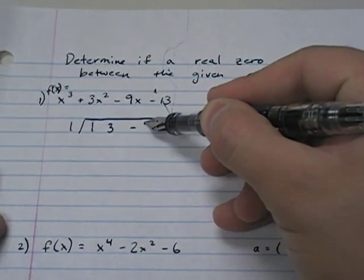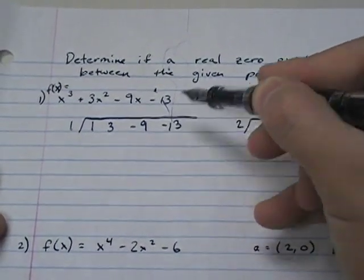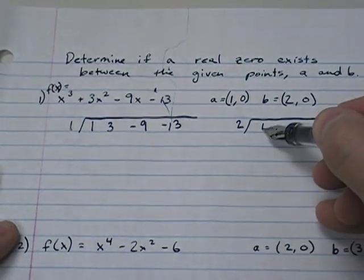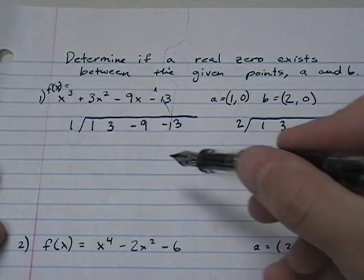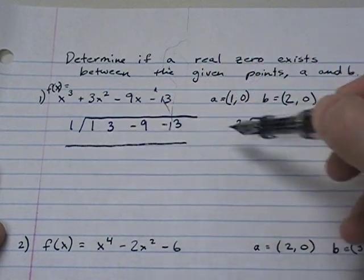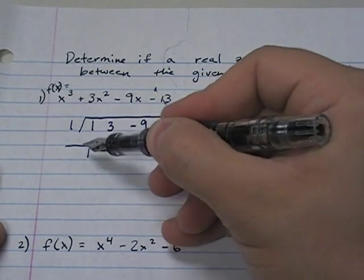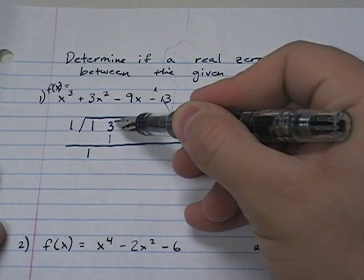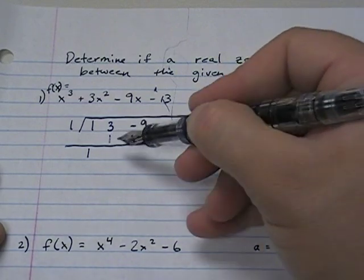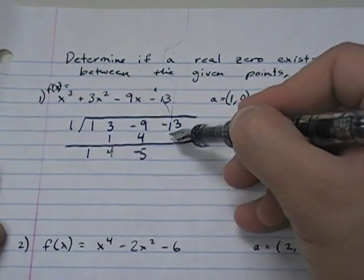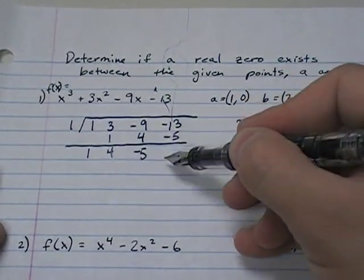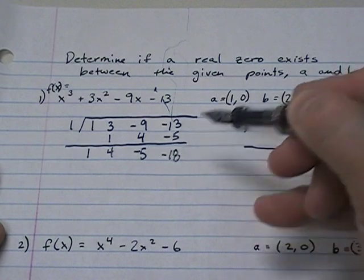One is 2 and one is 1. 1, 3, negative 9, negative 13. And this is 1, 3, negative 9, negative 13. And we're going to do two synthetic division problems. Copy, multiply, and then from there it's add and multiply. So add, multiply, add, multiply, and add. And we get negative 18.